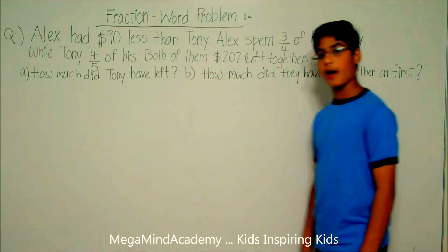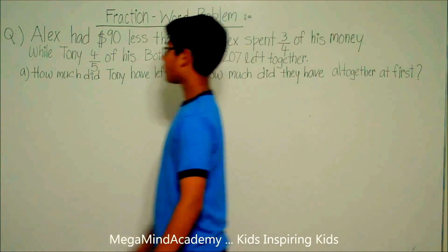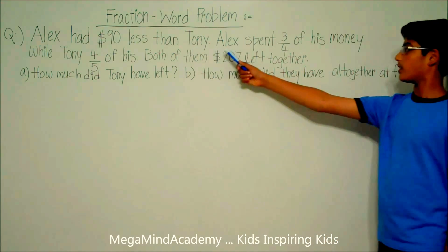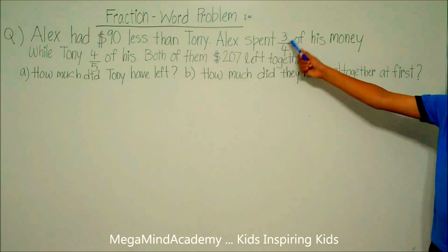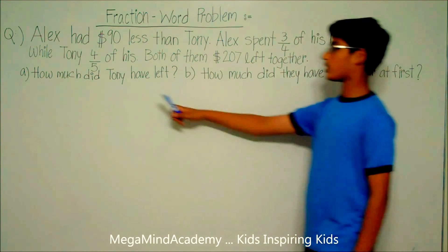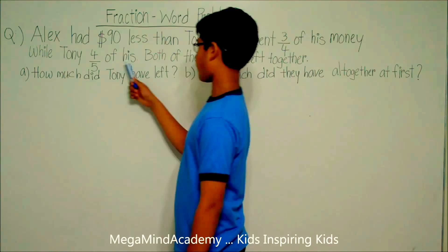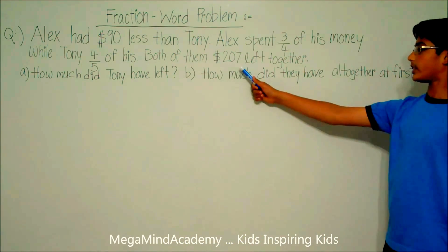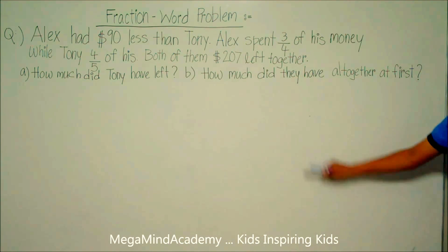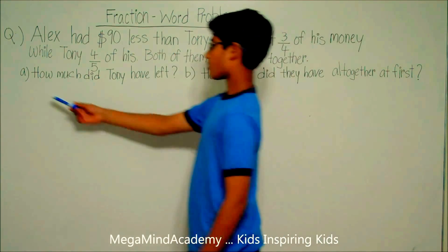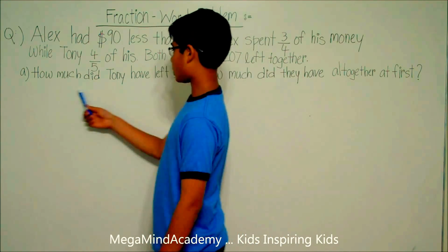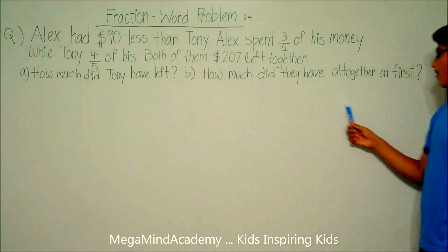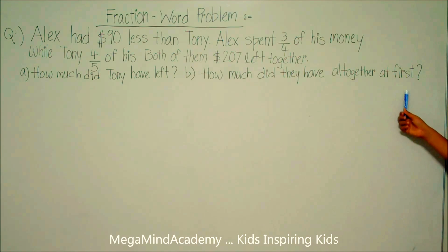Let's say we have a problem like: Alex had $90 less than Tony. Alex spent three-fourths of his money while Tony spent four-fifths of his. Both of them had $207 left together. Question A: How much did Tony have left? And question B: How much did they have altogether at first?